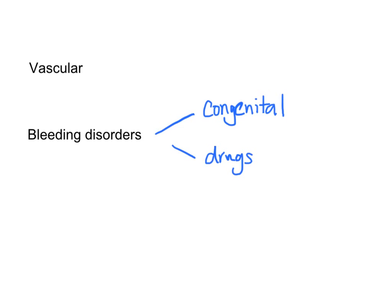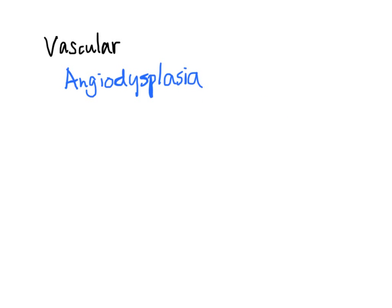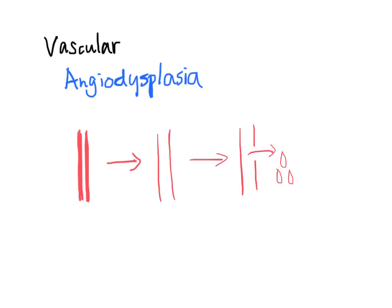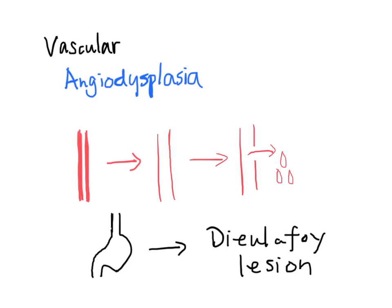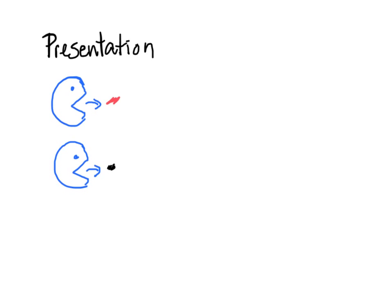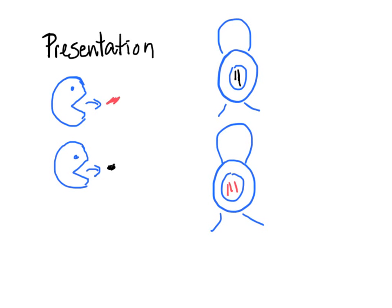We will now look at some general causes of bleeding in the upper GI tract. It can be from a vascular disorder or from a bleeding disorder that is either congenital or from drugs such as warfarin. The most often seen vascular cause is known as angiodysplasia, which can happen anywhere in the GI tract. In angiodysplasia, the normally strong wall of the blood vessel has become thin and friable, and it starts to bleed. If there is an angiodysplastic lesion in one of the small blood vessels in the stomach, it has a specific name called the Dieulafoy lesion. Depending on where the lesion is, it can present as hematemesis, coffee ground emesis, melena, or bright red blood per rectum.